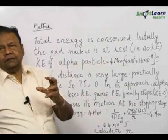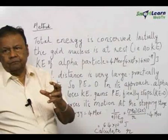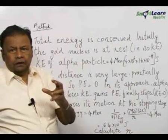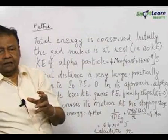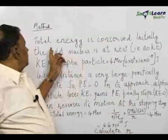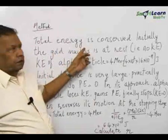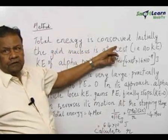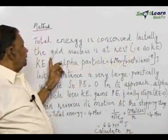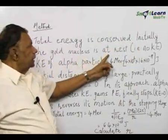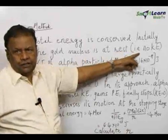The gold nucleus is at rest. This is a problem where the total energy is conserved. Follow the steps: the total energy is conserved. Initially the gold nucleus is at rest, therefore no kinetic energy.